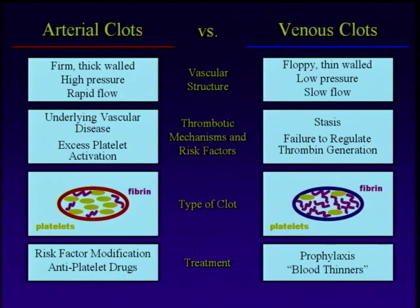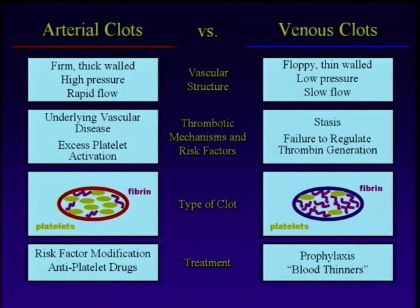If you look at these clots under the microscope: an arterial clot is mostly a wad of platelets with a little bit of fibrin — fibrin is the gooey clot-like stuff produced from that second step in the clotting cascade. A venous clot is just the opposite — it's mostly fibrin with just a few platelets stuck in there. Very different looking under the microscope, which is not surprising when you think about how each one formed.